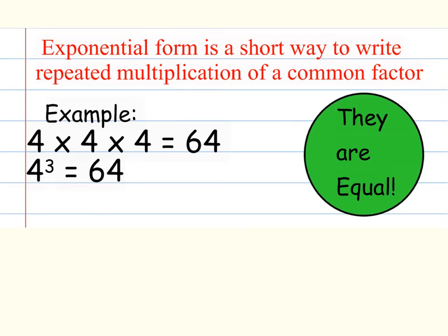Looking at another example, 4 times 4 times 4, you can see that you are going to have the same solution, product, or value when you write it both ways. You can say 4 times 4 times 4 is 64, or 4 to the 3rd power is 64. When your exponent is 3, you can also say cubed, so in this example, it would be 4 cubed.